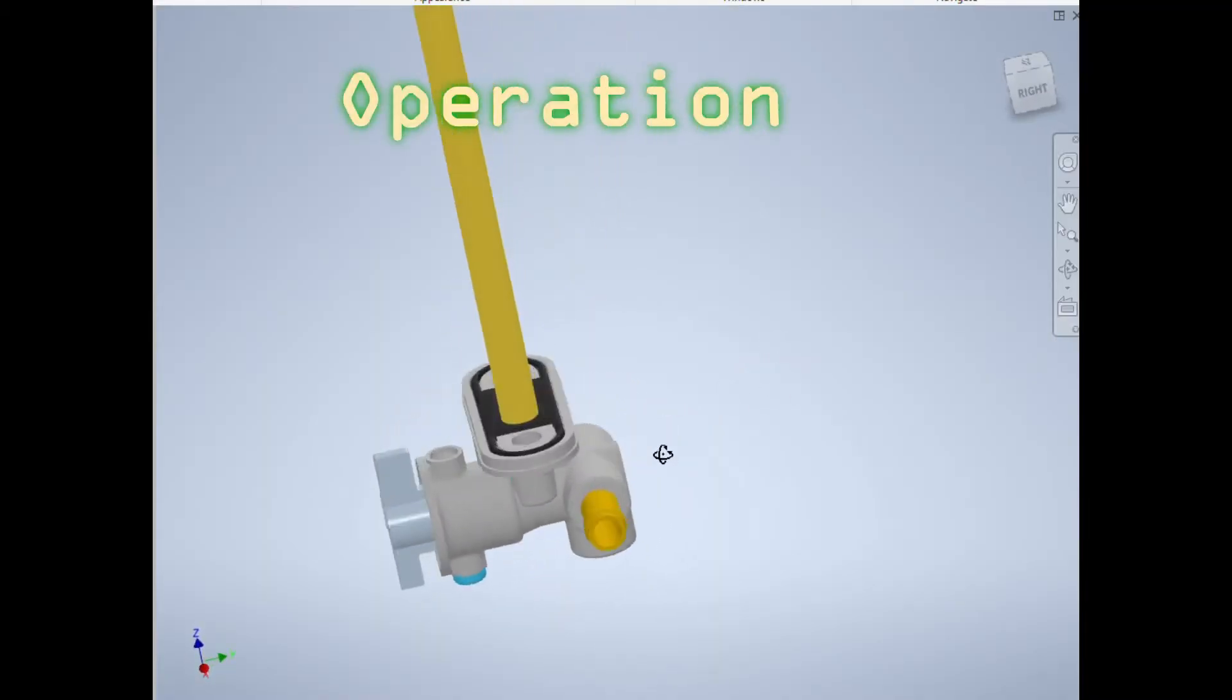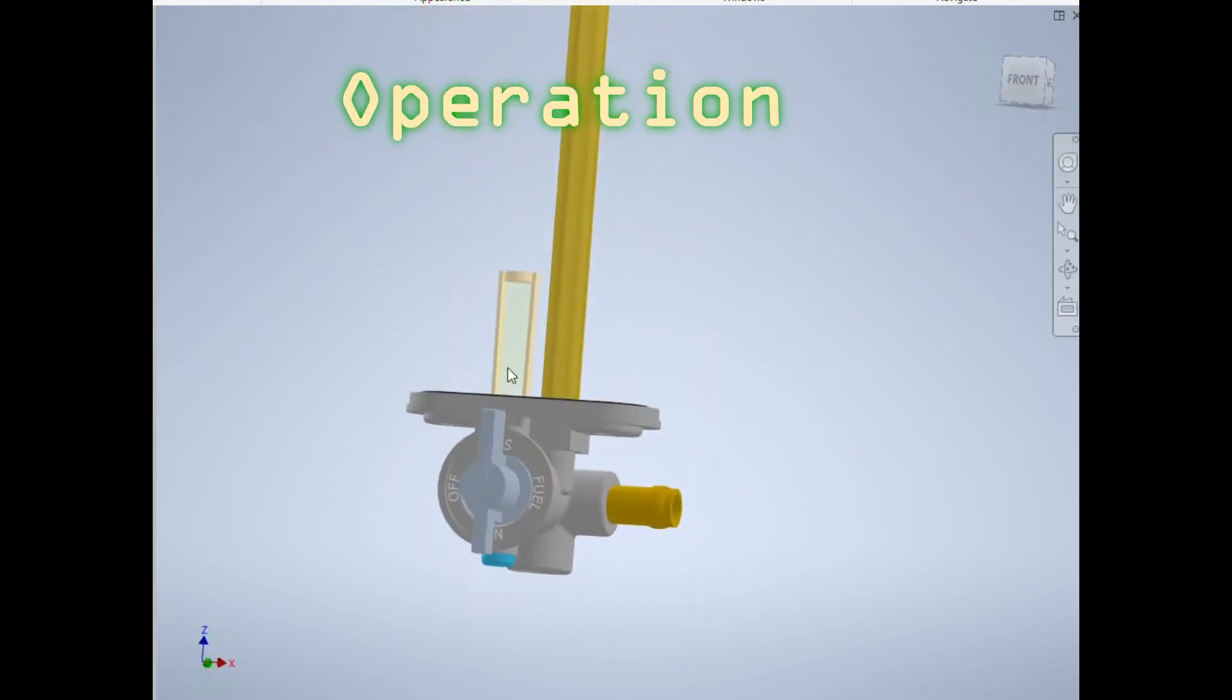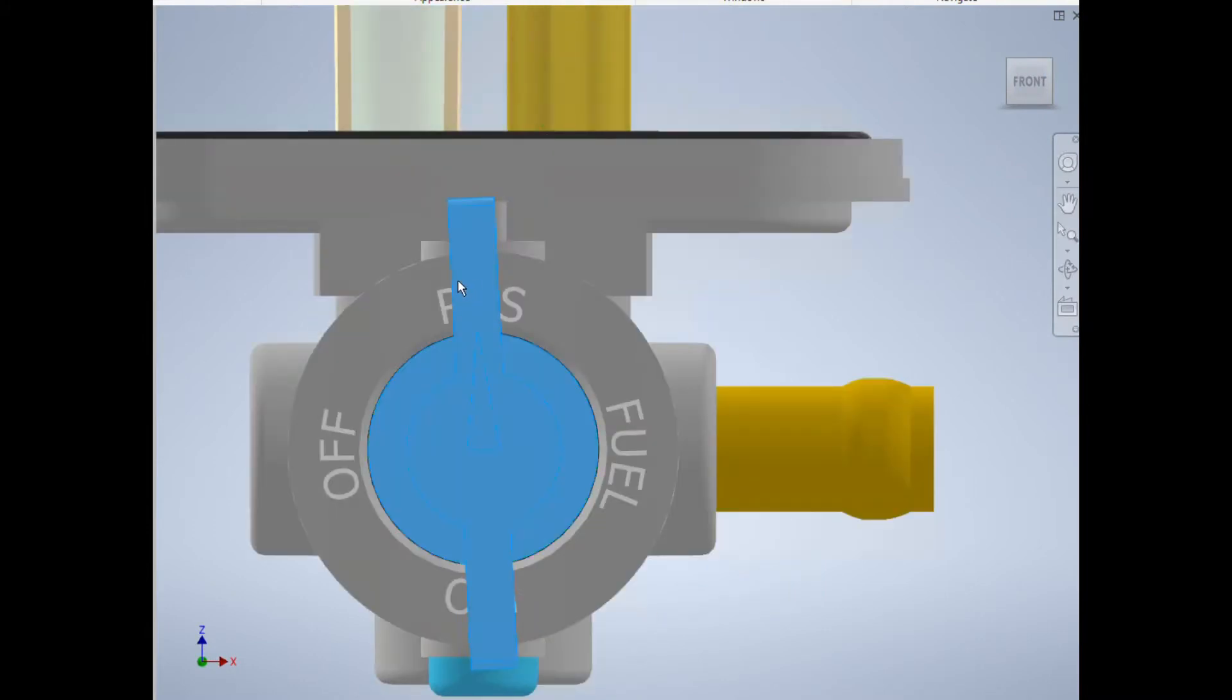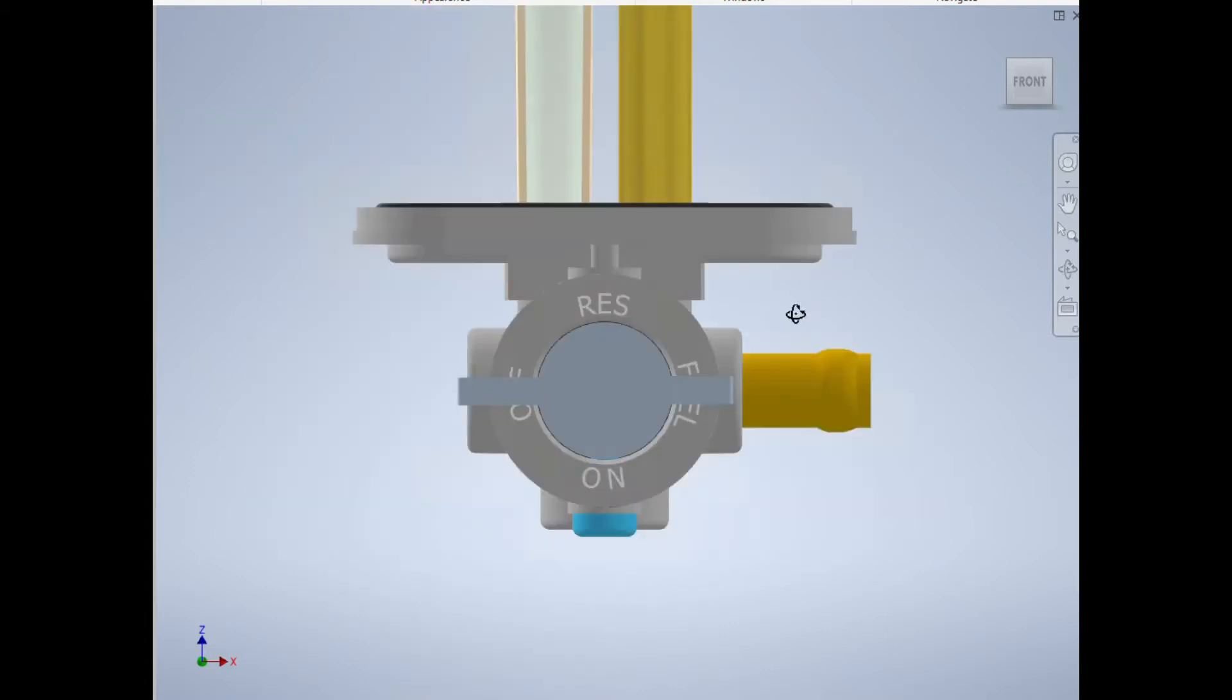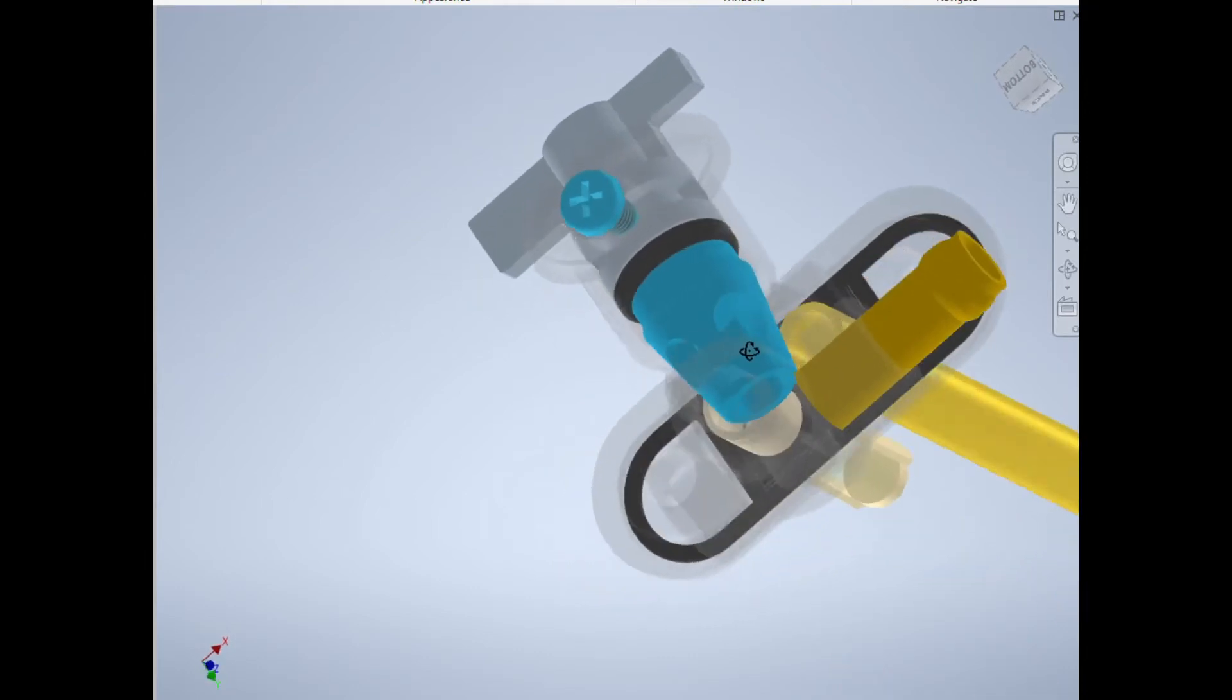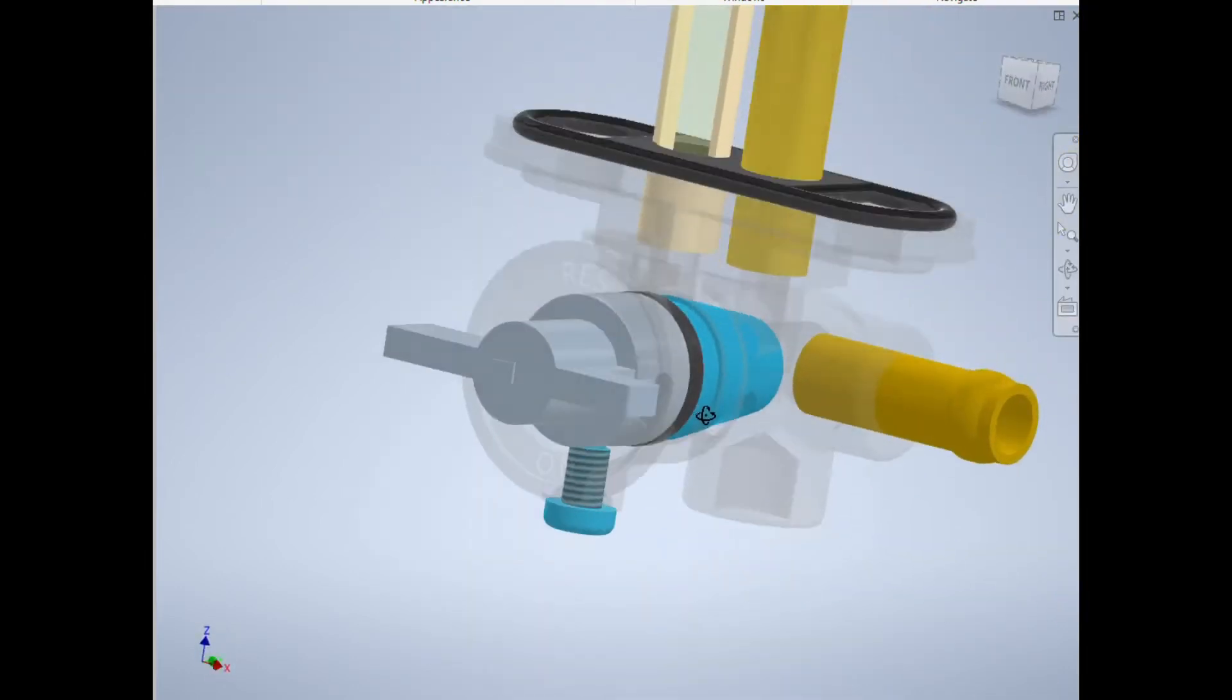The whole principle of this gravity-fed motorcycle petcock valve is pretty simple and clever. If we turn the switch into the OFF position and look inside the valve's body, we see that the whole principle revolves around the inner valve cone, which has two holes drilled at 90 degrees that join in a single outlet.